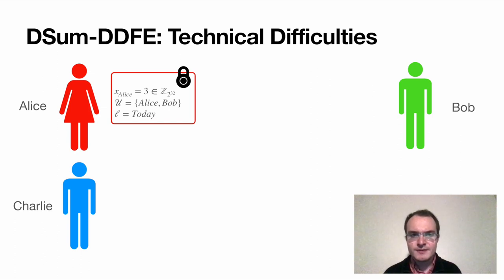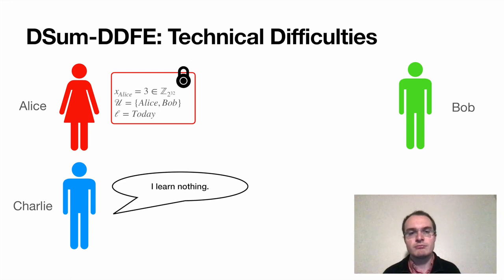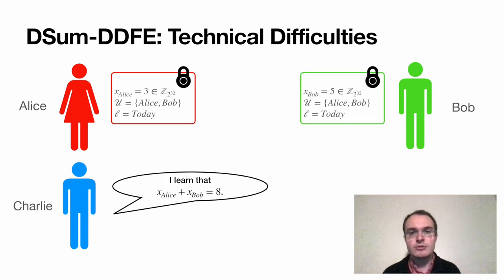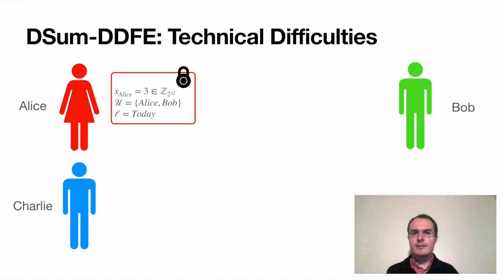So, is this enough to construct DSum DDFE? It's almost enough. But there's an issue that will stop you from proving security. Let's have a simple example with Alice wanting to aggregate data with Bob, and Charlie's the one that will compute the sum. Given only Alice's ciphertext, Charlie should learn nothing, because he needs one from Bob to decrypt. Once he gets Bob's ciphertext, Charlie should learn the sum. But now, what happens when Alice generates two ciphertexts, for the same label and the same pair of participants?